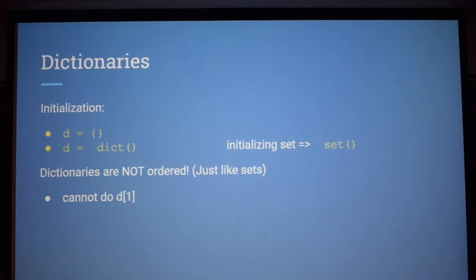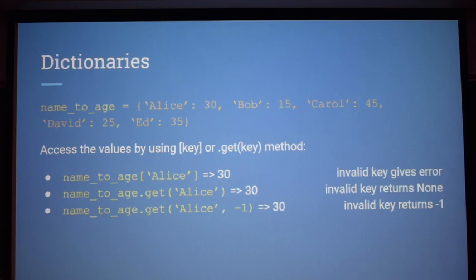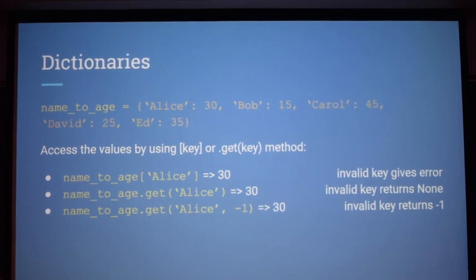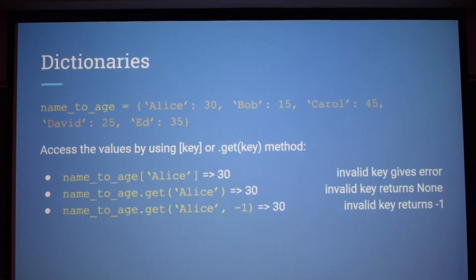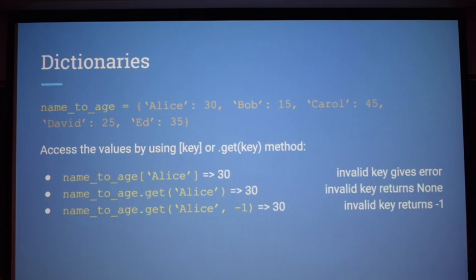Another thing to note is that dictionaries are not ordered. Unlike a list where you have indices, if you didn't have a key explicitly like one or something, you can't get the first or second element of a dictionary. For example, with a names-to-ages dictionary mapping strings to integers, you can get a value by indexing it — same as a list but with a string — and that would return 30. You can also use the get method, which does the same thing. The difference is if the key doesn't exist: indexing gives you an error, while get returns None.